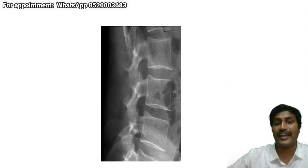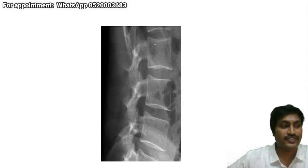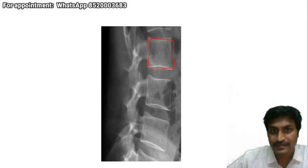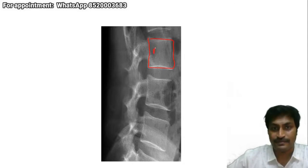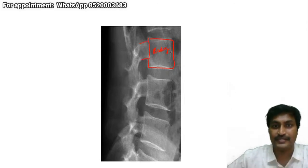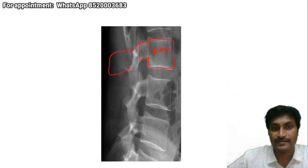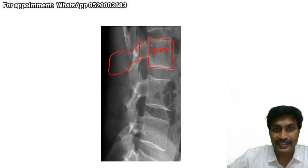So coming to the X-ray lateral view. This structure which you are seeing is the vertebral body — this forms the anterior column. This structure which you are seeing is the pedicle. And all the structures beyond this are the posterior elements. This is the lamina and this is the spinous process. So: this is the body, this is the pedicle, and this is the lamina with the spinous process.